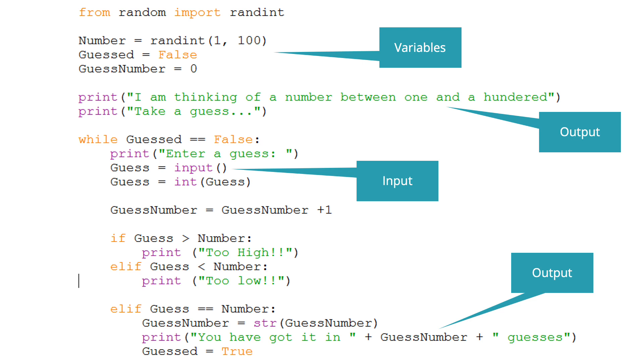Input. So guess equals input. We are asking the player to enter a guess. Output. Where we're printing, I'm thinking of a number between 1 and 100. Take a guess. And an output towards the bottom. So an output is anywhere really we see our print symbol.